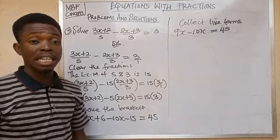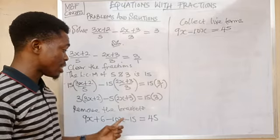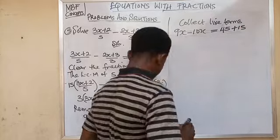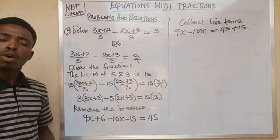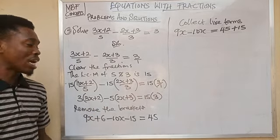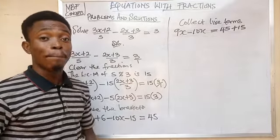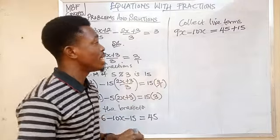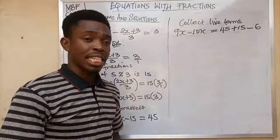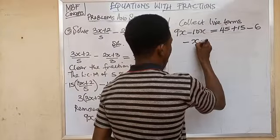When we move minus 15 from the left-hand side to the right-hand side, the sign changes to plus 15, obeying rule 3. When we move plus 6 from left to right, it becomes minus 6, obeying rule 2. Then 9x minus 10x gives minus 1x on the left. On the right, 45 plus 15 equals 60, and 60 minus 6 gives 54.